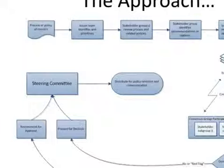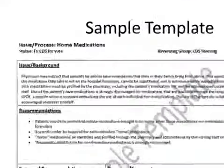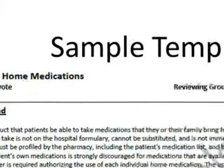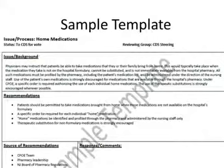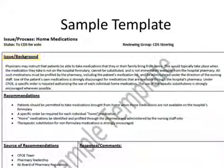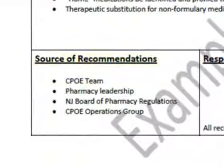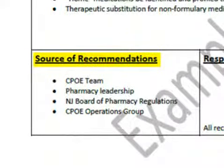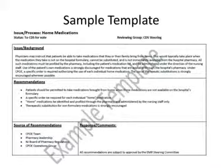The steering committee, having closed on issues, will forward them to the appropriate groups for policy revisions, communication, and implementation. Here is an example of an issues template. Note that the template will have a header that describes what the issue is and its current status in the review process. Then there will be a section called Issues and Background that will give you the context for the recommendation or options that you are presented with, and a section that includes the options or the recommendation. In the bottom left, the source of the recommendations. Finally, if additional information is required, it will be noted in the response or comments area. Once you have reviewed the template, you are ready to cast your vote.